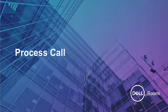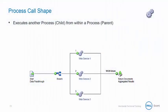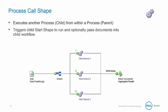The final topic of this section of Developer 2 is Process Call. A process call shape executes another process, known as a child, from within a parent process. It triggers a child start shape to run and optionally passes documents into the child workflow.